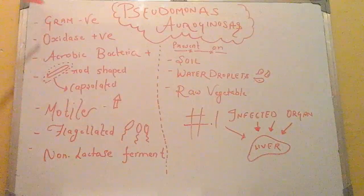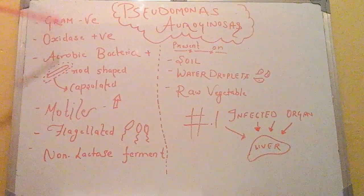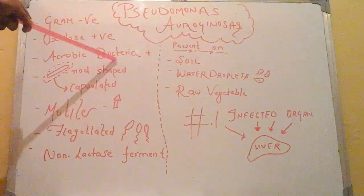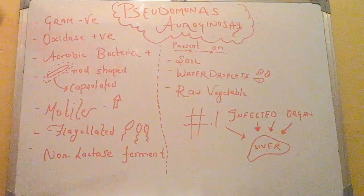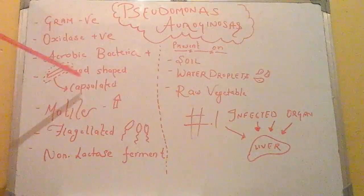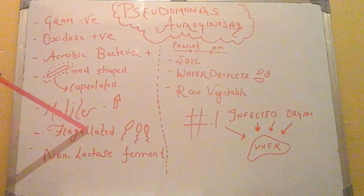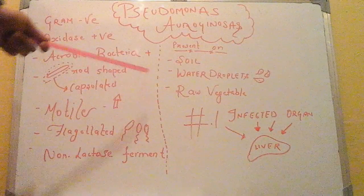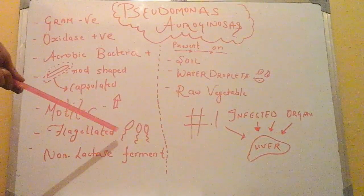First, we will start with the gram-negative characteristic. This is gram-negative, oxidase positive, aerobic bacteria, rod shape as we can see. It is covered with a capsule, so it is capsulated. It is very motile since it has a flagellum. If a bacteria is motile, then it has some motility character.